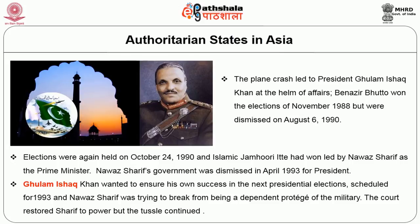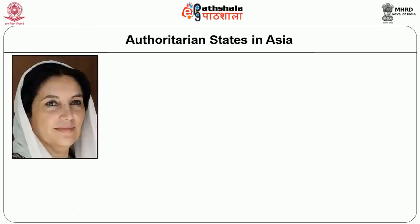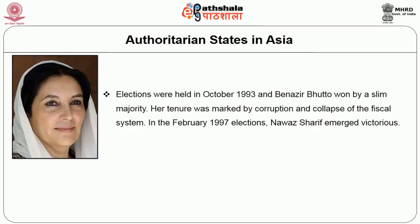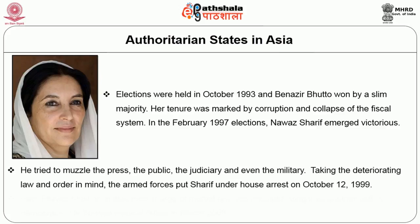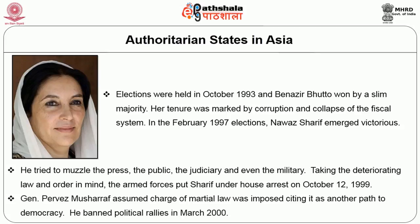The court restored Sharif to power but the tussle continued. Elections were held in October 1993 and Benazir Bhutto won by a slim majority; her tenure was marked by corruption and collapse of the fiscal system. In the February 1997 elections, Nawaz Sharif emerged victorious. He tried to muzzle the press, the public, the judiciary, and even the military. Taking the deteriorating law and order into account, the armed forces put Sharif under house arrest on October 12, 1999. General Pervez Musharraf assumed charge as martial law was imposed, citing it as another path to democracy.